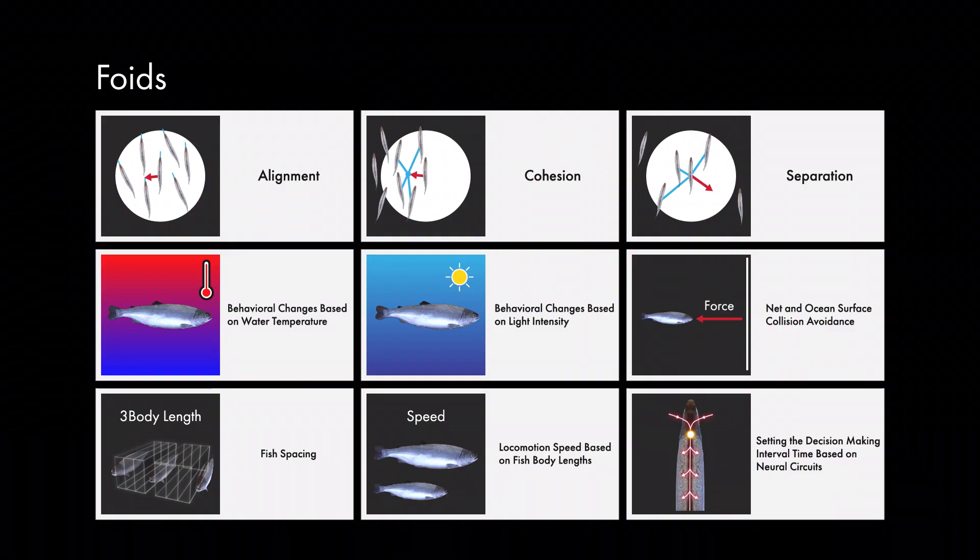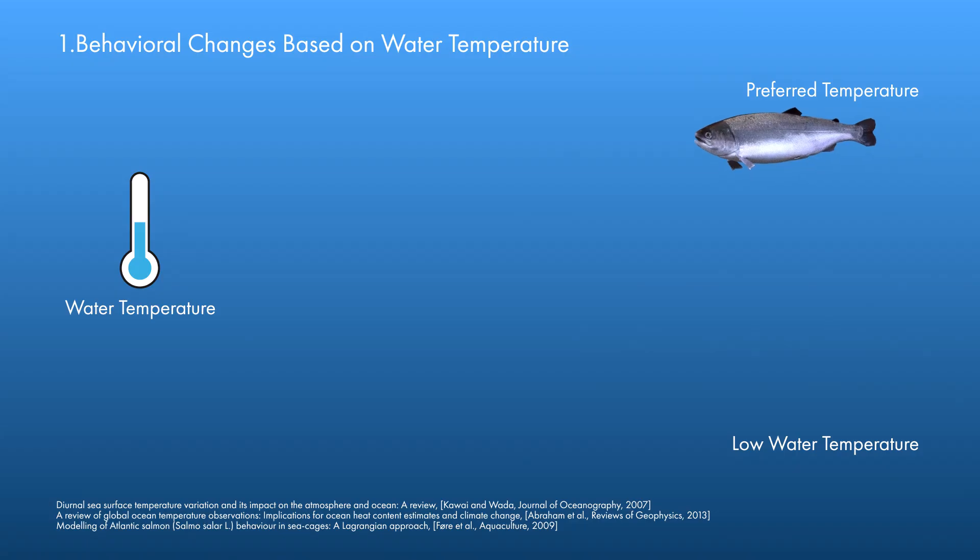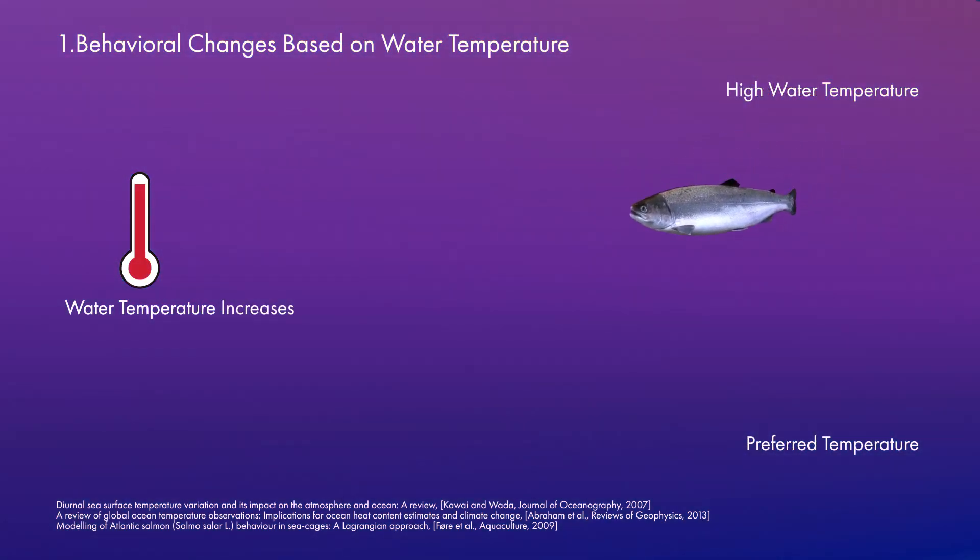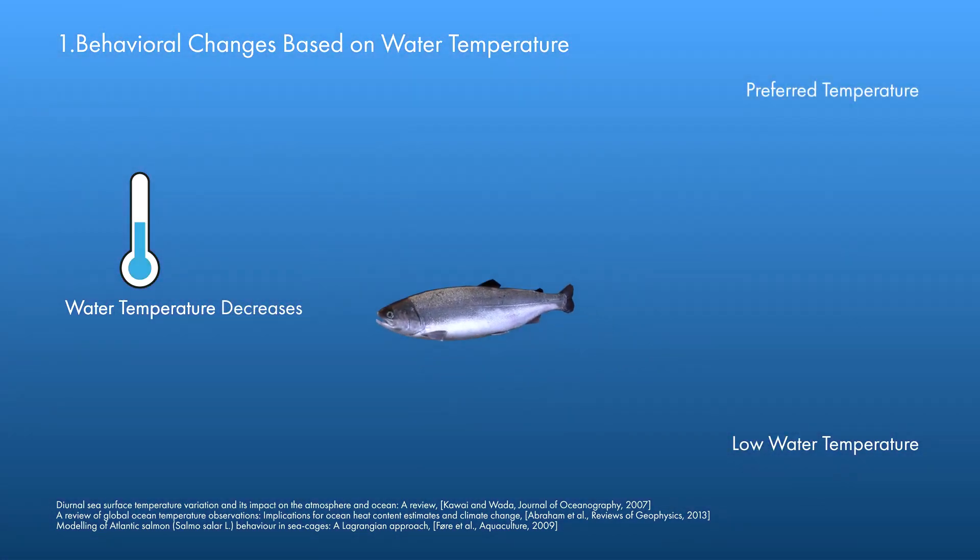To produce the schooling behavior inside the cage, we designed an algorithm based on fish biology and ecology and named it FOIDS. Fish's temperature preferences differ by age and per individual. As the water temperature changes, fish swim to different depths to find their preferred temperature.